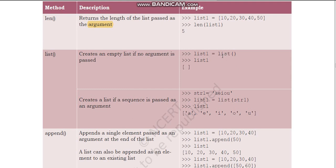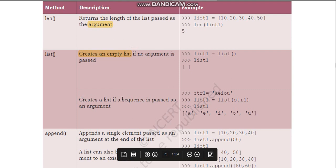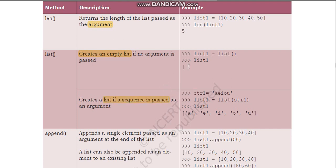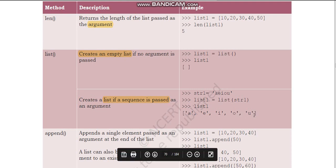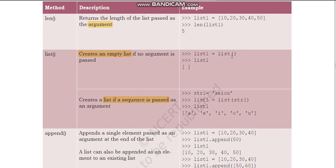The list() function also creates a list if a sequence is passed as an argument. In the first example there was no argument, so an empty list was created. In the second example, string1 = 'aeiou' and list1 = list(string1). Here string1 is the argument, so its contents become the contents of list one.